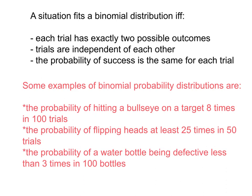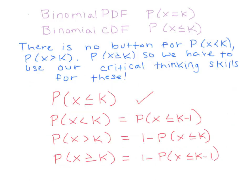For most problems, you're going to use your calculator to help calculate binomial probability. In the probability distribution section of your TI-84, there are two options: binomial PDF and binomial CDF. Remember that CDF stands for cumulative probability — that's the probability of something happening less than or equal to a certain number of times.